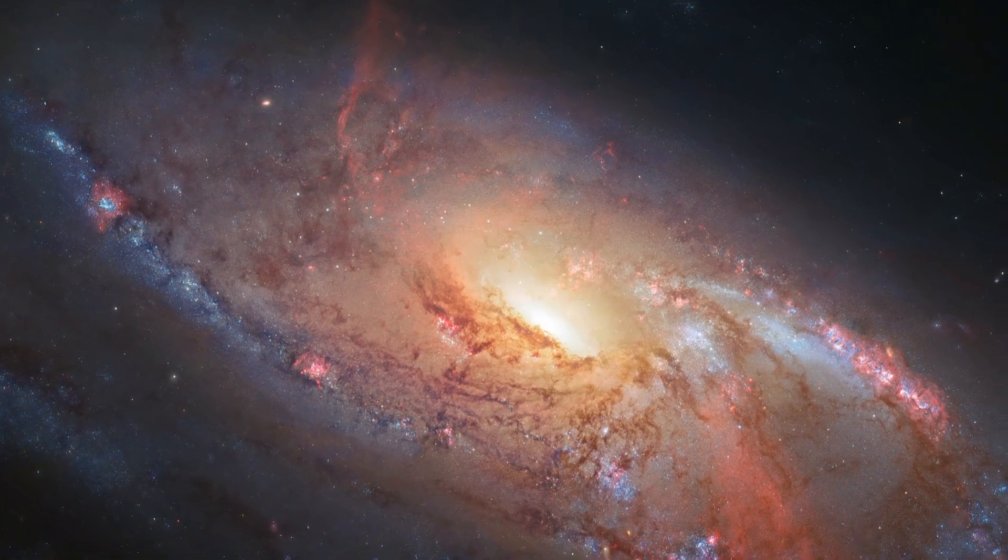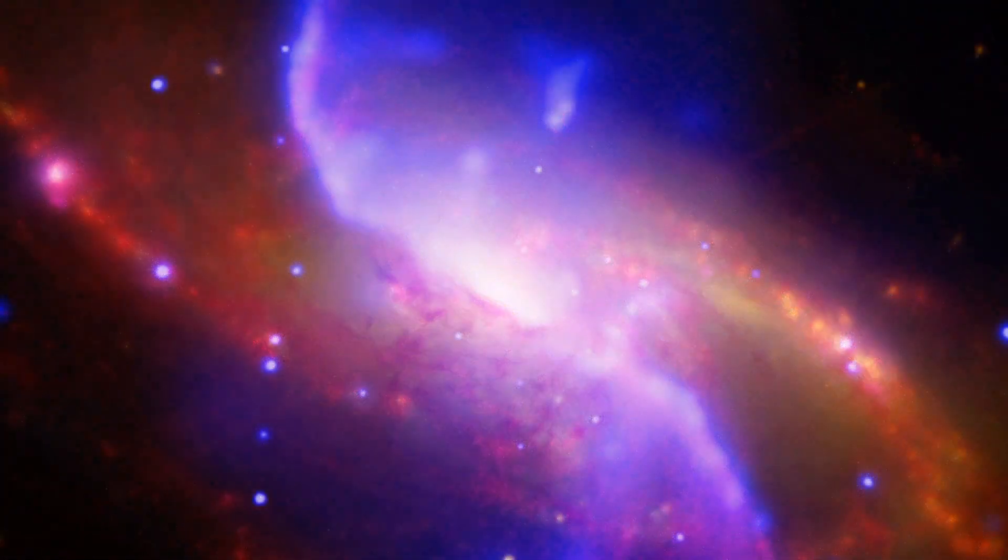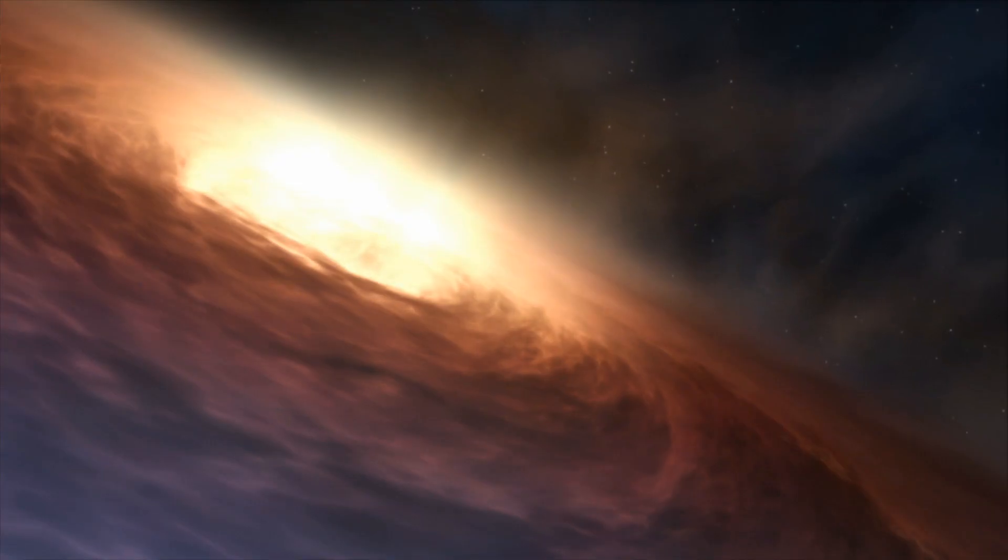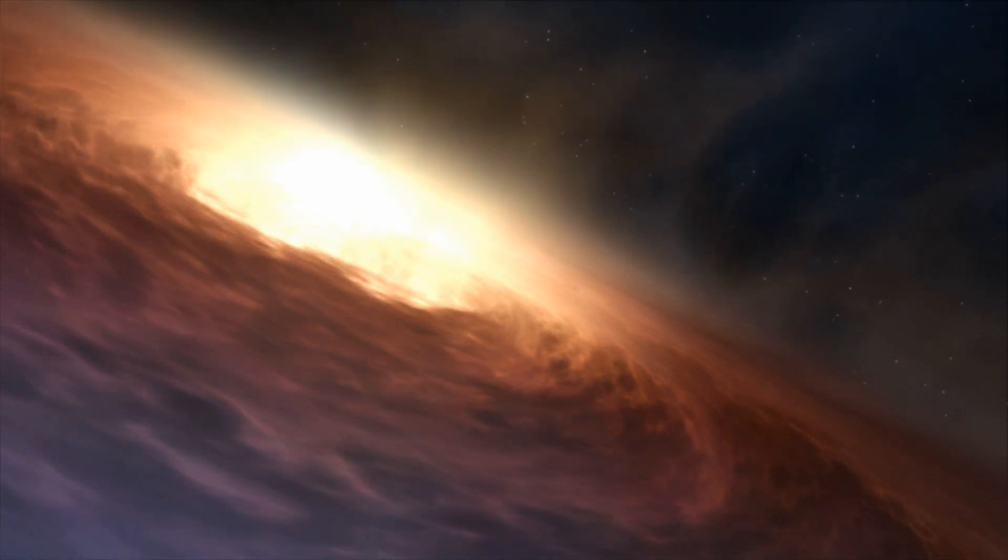While these ghostly extra arms have been known about for decades, astronomers were unsure of how they formed. Until recently. Yet again, the culprit is Messier 106's supermassive black hole.